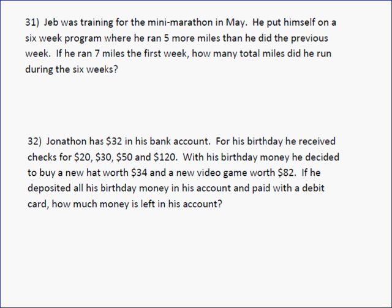Problem 31 says Jeb was training for the mini marathon in May. He put himself on a 6-week program where he ran 5 more miles than he did the previous week. If he ran 7 miles the first week, how many total miles did he run during the 6 weeks? So the first day, it says that he ran 7, first week. Second week, he ran 12 more than that. The third week, he ran 5 more than that, so 17.